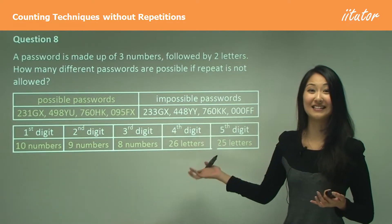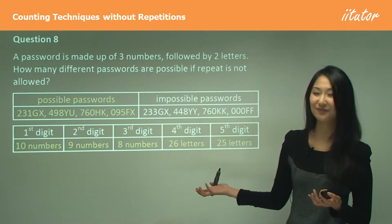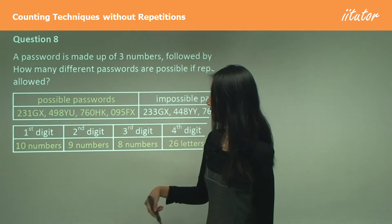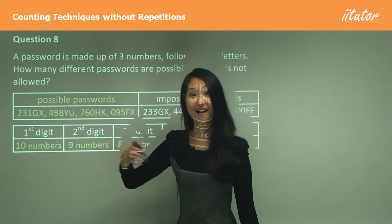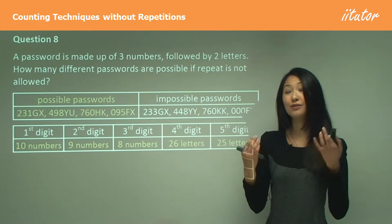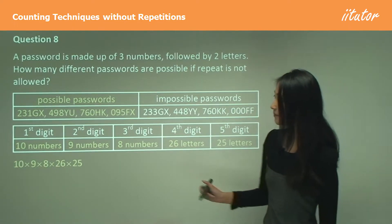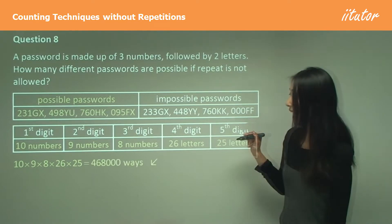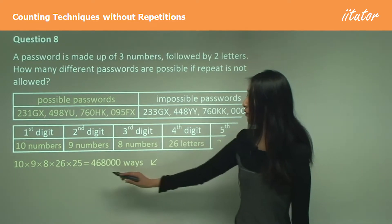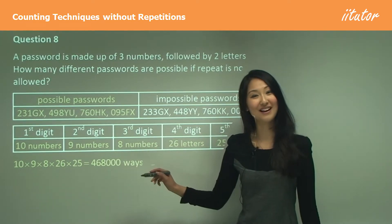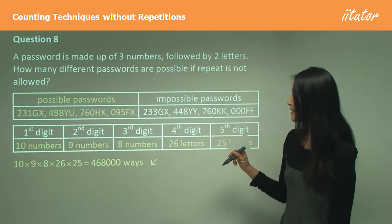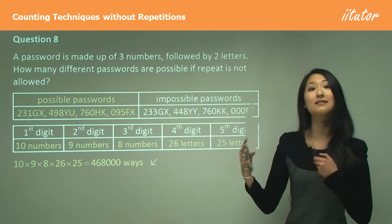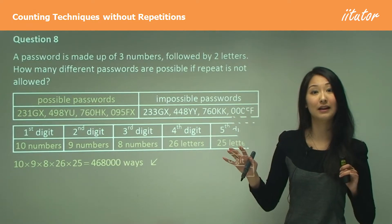Because it's 'and' between all positions, we multiply everything together: 10 × 9 × 8 × 26 × 25, which gives 468,000 ways. The important thing here is that when working with numbers and letters, consider them separately — the letters always start fresh at 26.